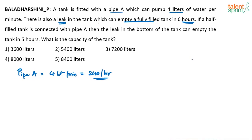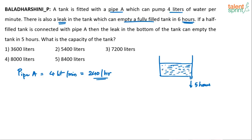The tank is half filled — half was filled, half was empty — and it has inlet pipe A and the leakage. The leakage took 5 hours to empty the half-filled tank. Don't do all this drama in the exam; you won't get extra marks for this. Remember, pipe A can fill 240 liters per hour.